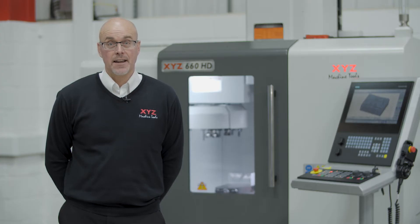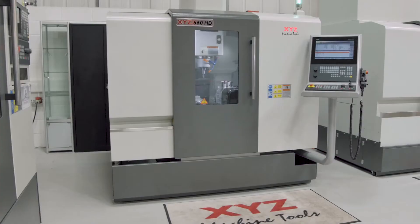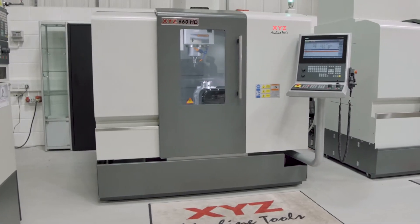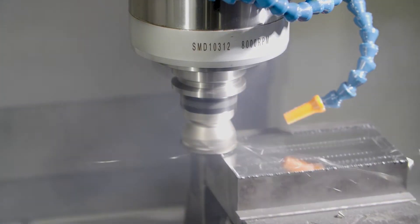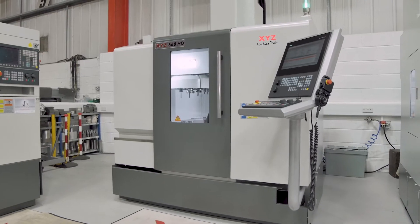Today we are going to look at the XYZ 660 HD vertical machining center. There are six machines in the HD family, including the super heavyweight one meter Y-axis machines. So if you are looking for a different size, please check out the link on the website below.